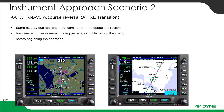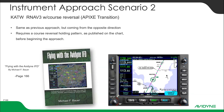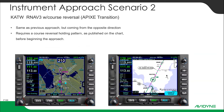This is the RNAV-3 with a course reversal at Apixi, out of Appleton. You can find this scenario on page 166 of Flying with the Avidyne IFD by Michael F. In a previous lesson, we flew the RNAV-3 approach from Fond du Lac via Oshkosh into Appleton.